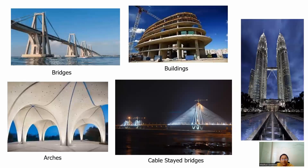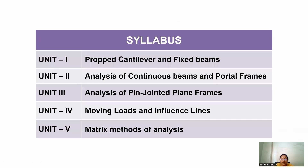In the next slide, you can see the different types of civil engineering structures, which include bridges, buildings, arches, cable-stayed bridges, towers, etc. Now coming to the syllabus of the Structural Analysis course: it consists of five units, and we are going to see in detail what contents are going to be covered in each unit.